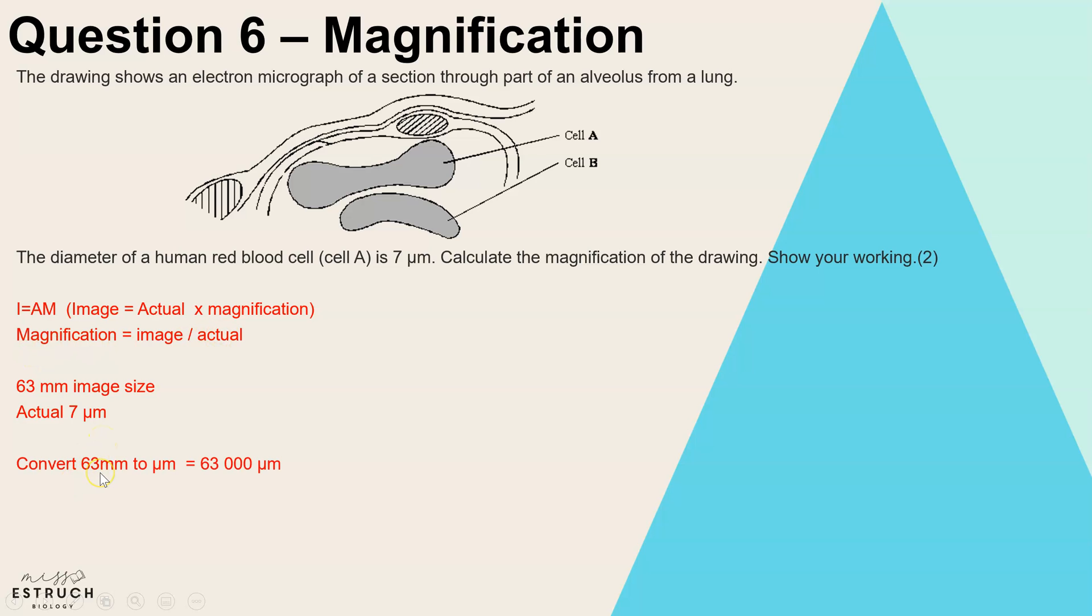Before we put that into the formula, we need to convert them to be in the same units. So I'm going to convert the 63 millimeters to micrometers, and that would be times by a thousand because micrometers are a thousand times smaller. So 1,000 micrometers fit into one millimeter. So times by a thousand and we've got 63,000 micrometers as our image size. So 63,000 divided by seven gives us a magnification of 9,000.